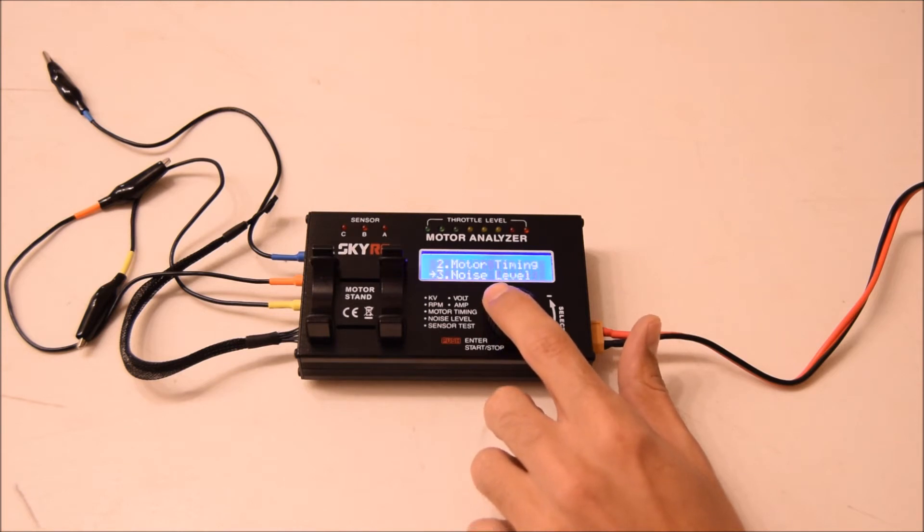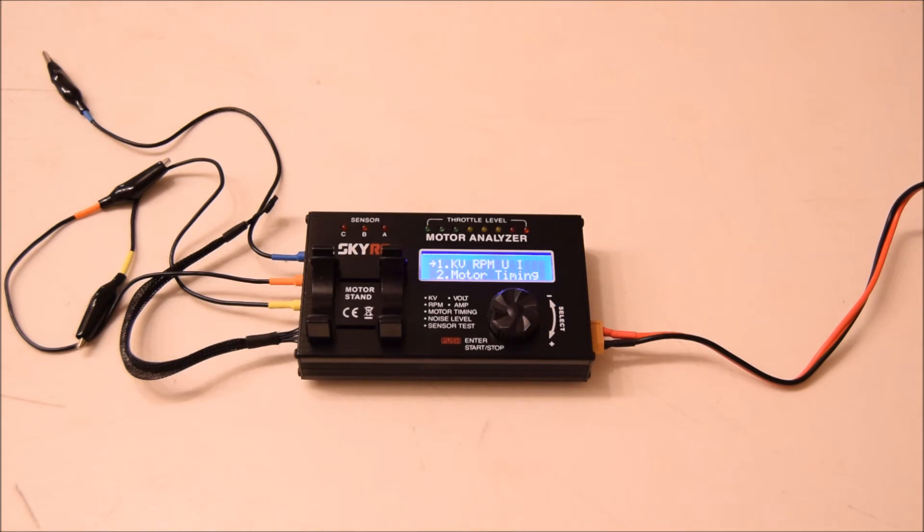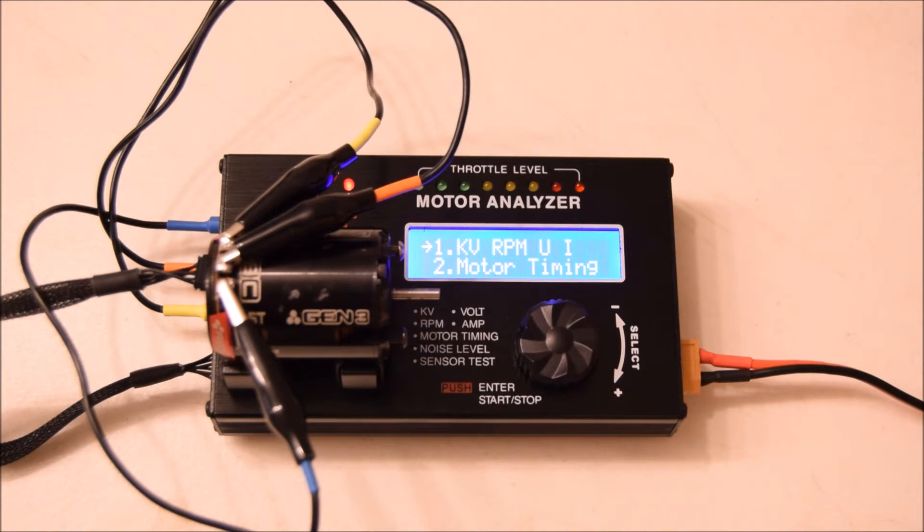There's a wheel for you to scroll through options. Some of the functions are KV measurement, RPM measurement, voltage measurement, amp measurement, motor timing, and noise level. It does quite a bit for one little device.